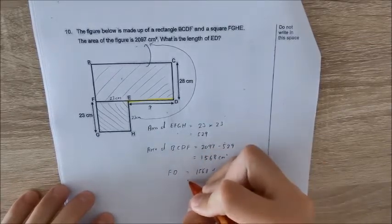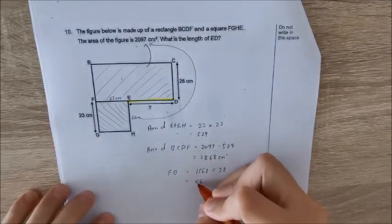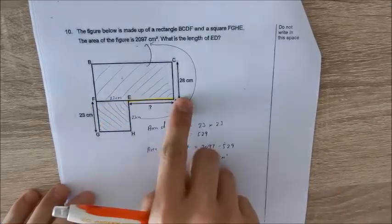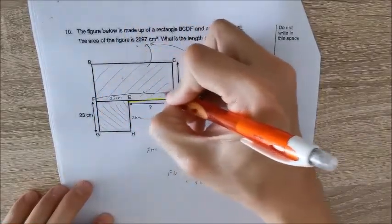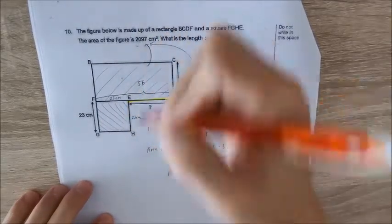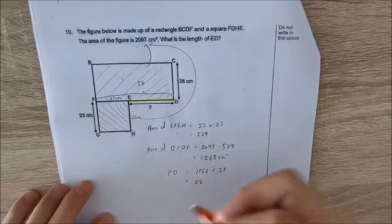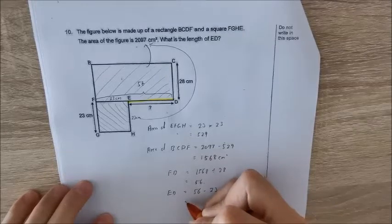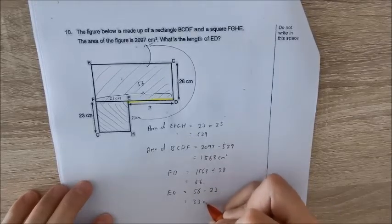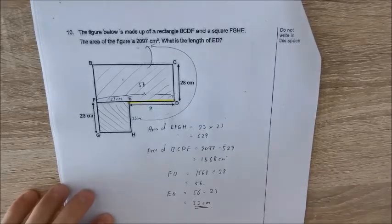And if this is 56 cm, this is 23. Maybe I just label for you. If this is going to be 56, I just take 56 minus 23, I can find ED. So ED is just 56 minus 23, I will have 33 cm. Okay, so that's the answer.